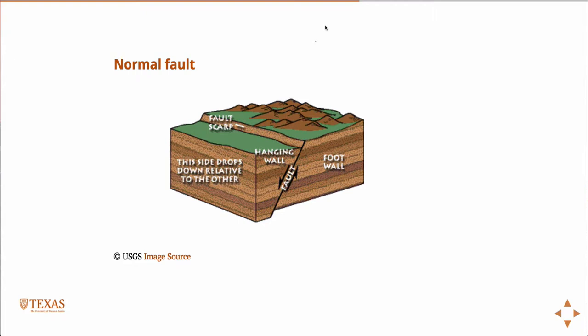Any fault has a hanging wall and a foot wall. The way I always remember is kind of two ways. The foot wall is the one that has an acute angle with respect to the fault. Remember what an acute angle is? It's an angle less than 90 degrees. The foot wall always has an acute angle with respect to the fault. Additionally, it's the one that kind of looks like a foot.